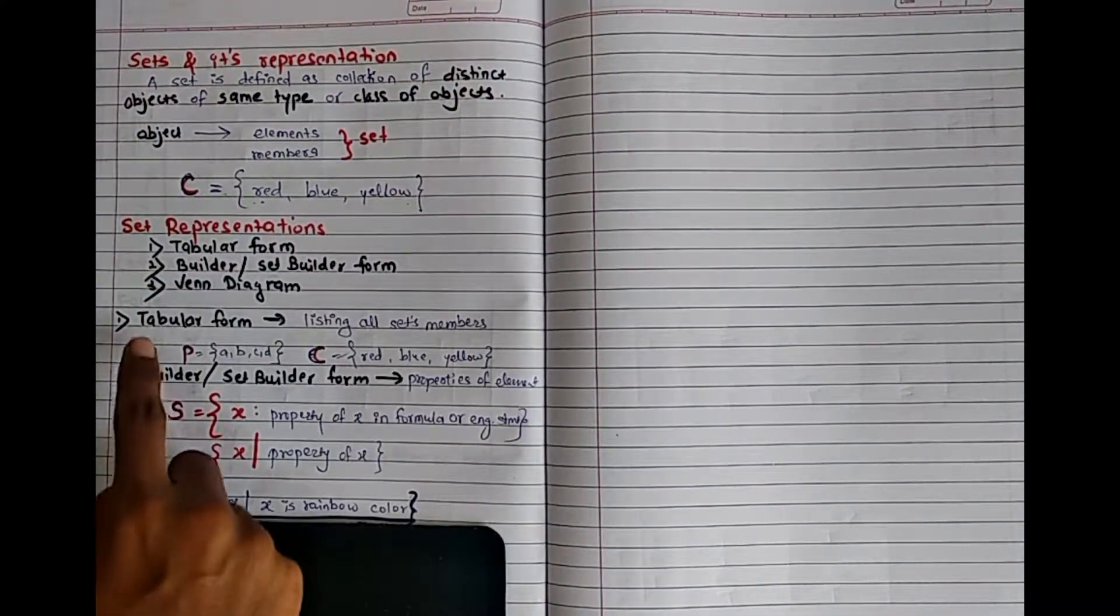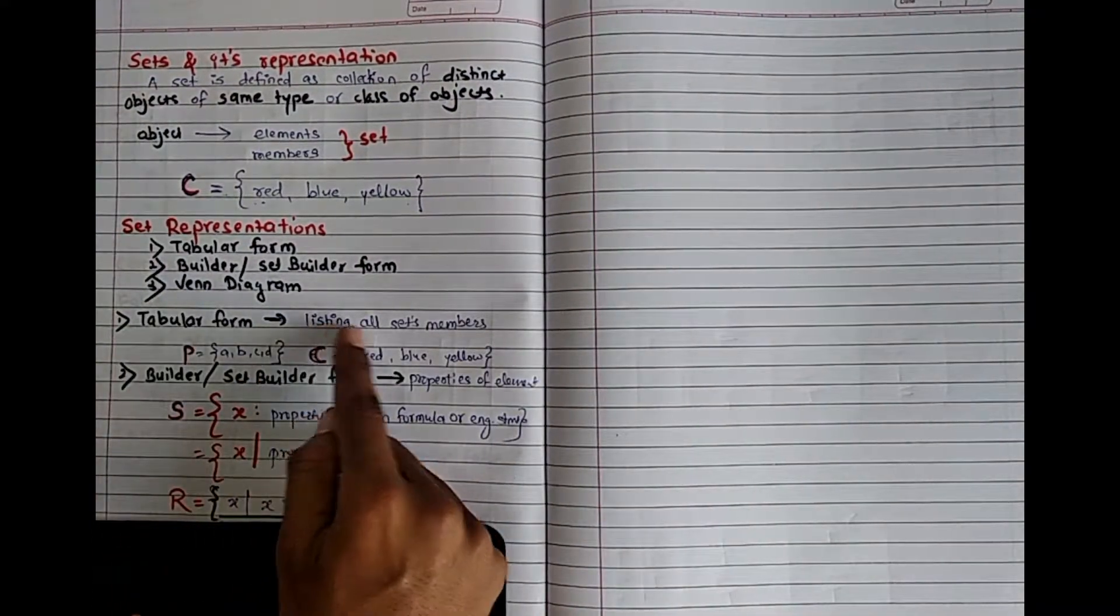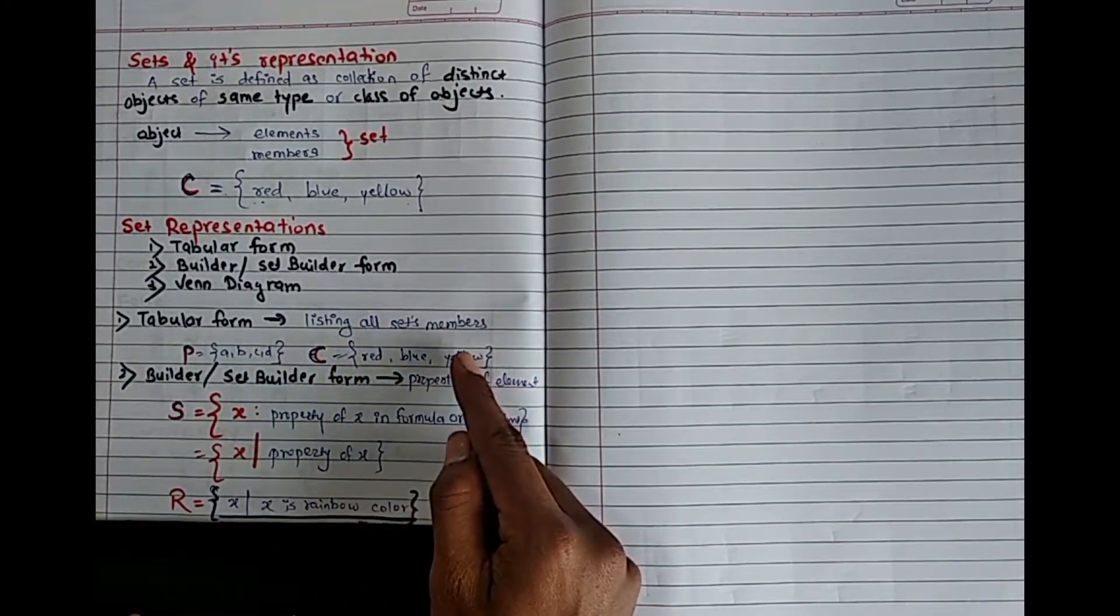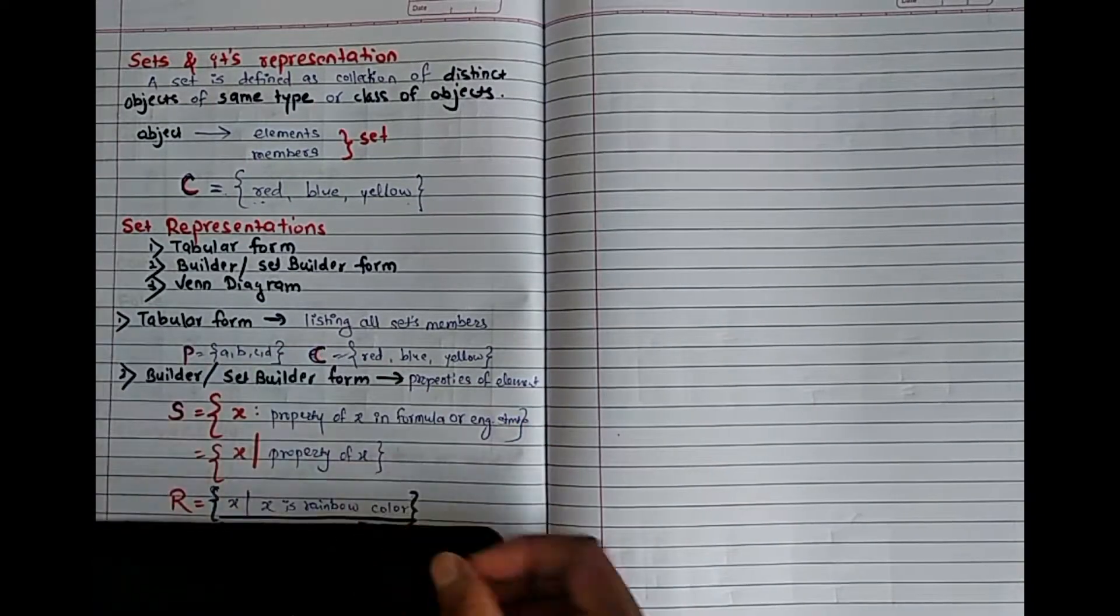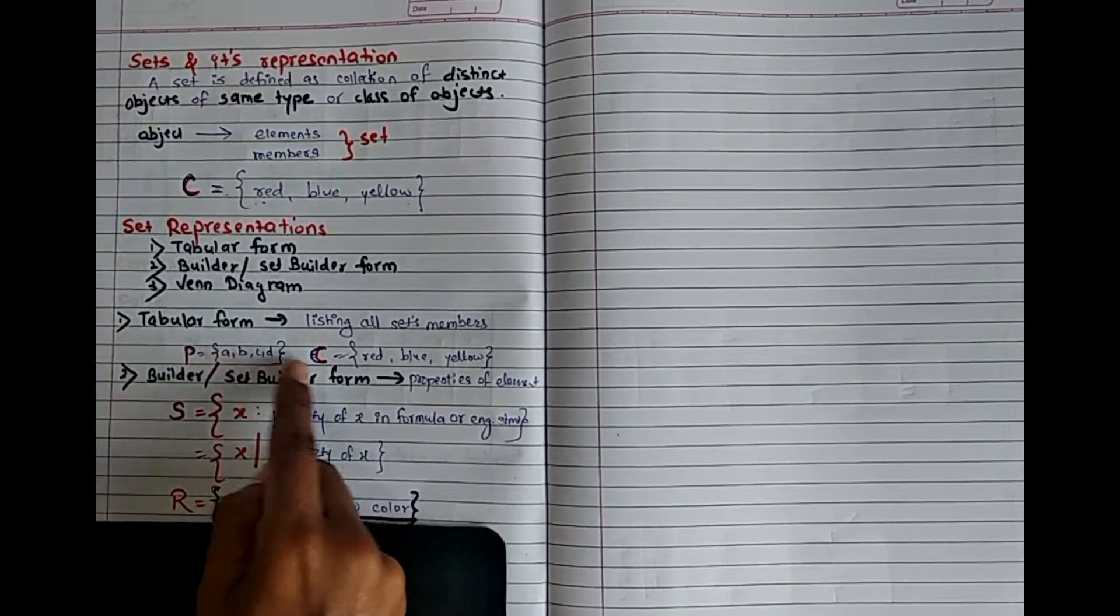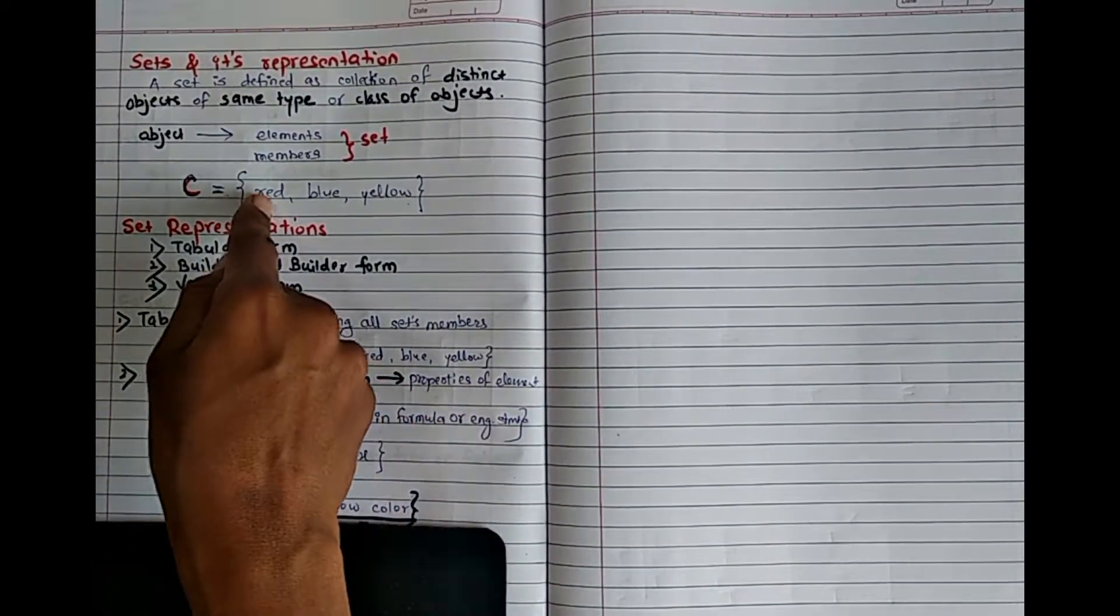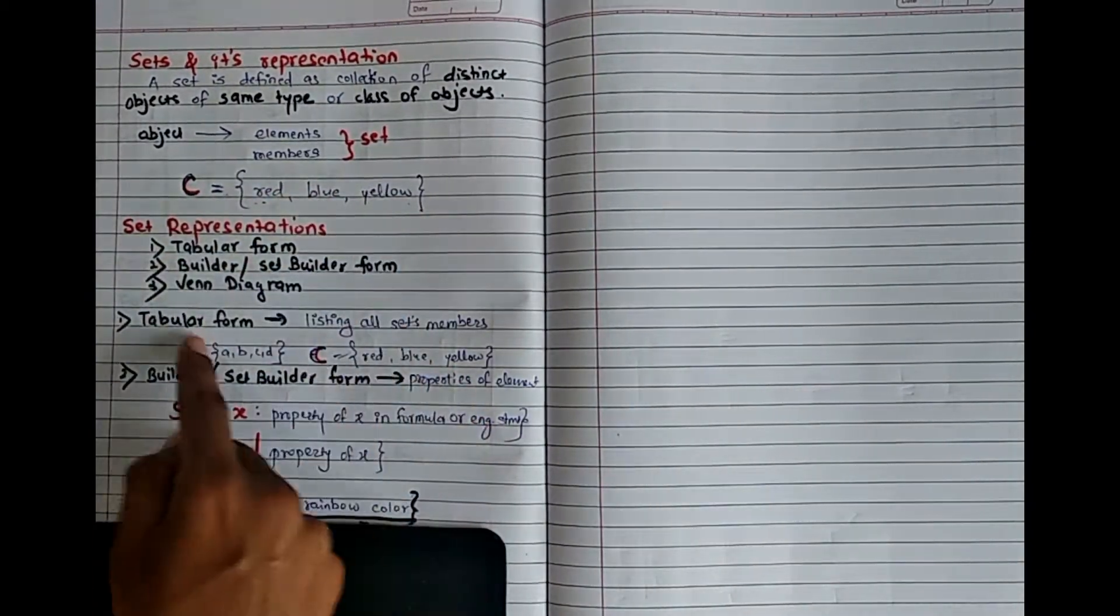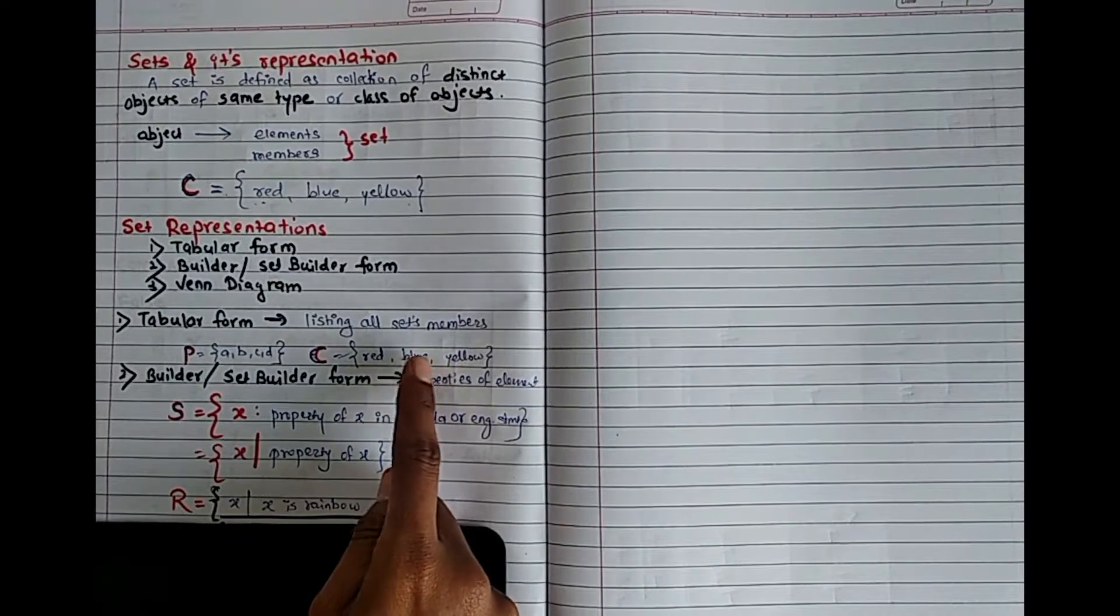For the first form, tabular form, it is listing of all the set members as it is. Like all the set members as it is, they are separated by using commas. So I can say like the same color - that is the tabular representation of three colors: red, blue and yellow.